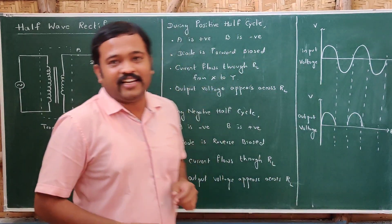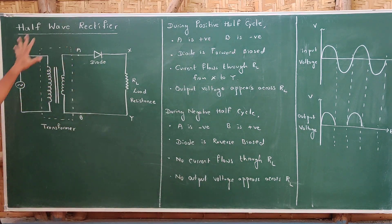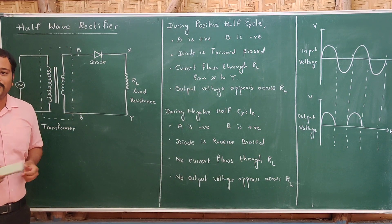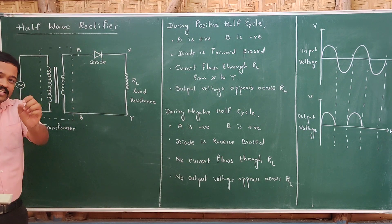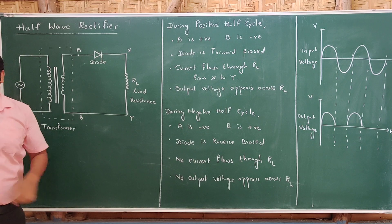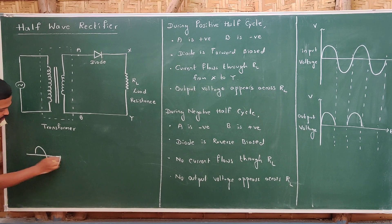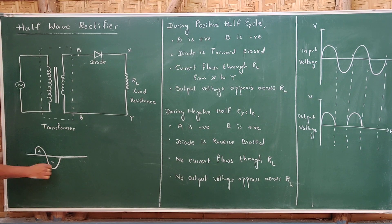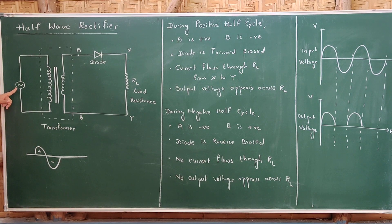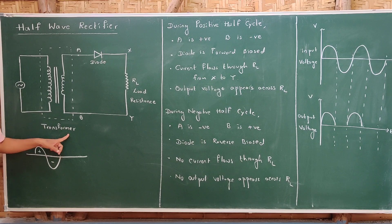Let us understand the half wave rectifier. The circuit diagram is like this — this is the circuit present inside your mobile charger box. Here there is an input, and this input is AC input. We know that AC input has a positive half cycle and a negative half cycle — this is one complete cycle. This AC input is connected to a device called a transformer.